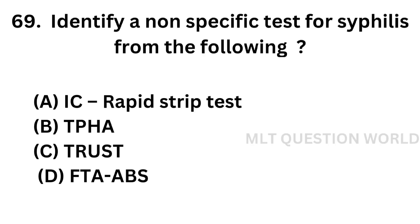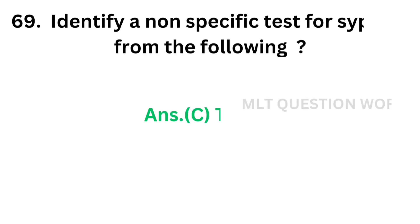Question 69. Identify a known non-specific test for syphilis from the following: Option A: IC rapid strip test. Option B: TPHA, that is Treponema pallidum hemagglutination test. Option C: TRUST. Option D: FTA-ABS, fluorescent treponemal antigen absorption test. The correct answer is Option C. TRUST is a modification of VDRL test; it is a known non-specific test. All the others are specific tests for syphilis.